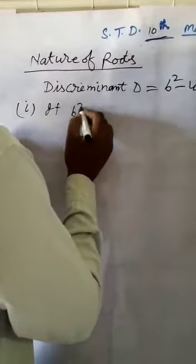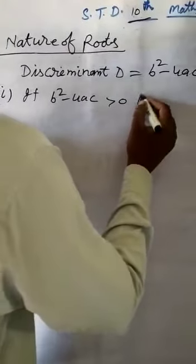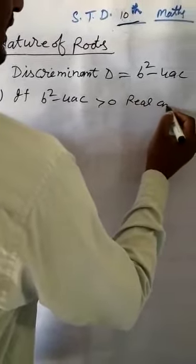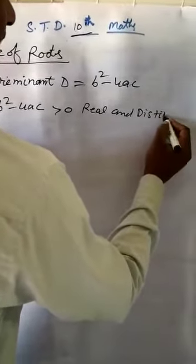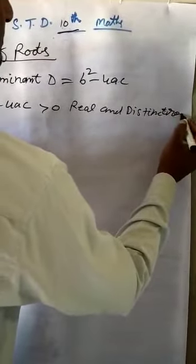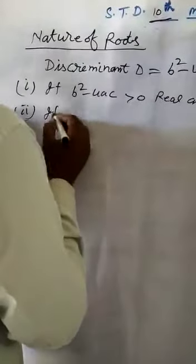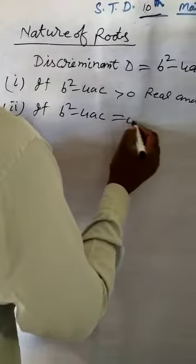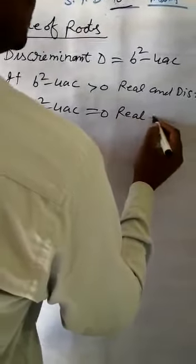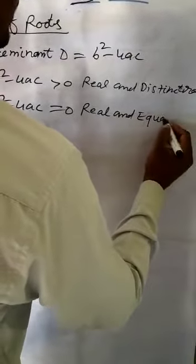First part: if B square minus 4AC greater than 0, the roots are real and distinct. Second: if B square minus 4AC equal to 0, the roots are real and equal.